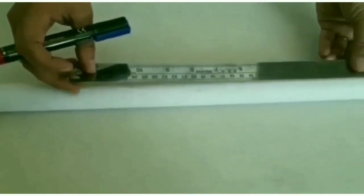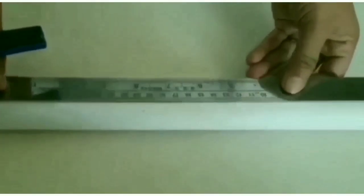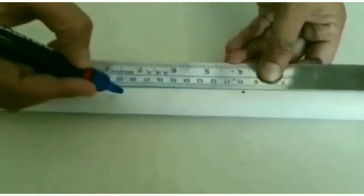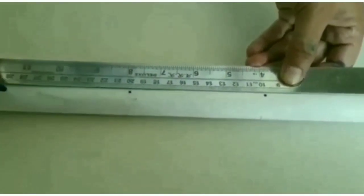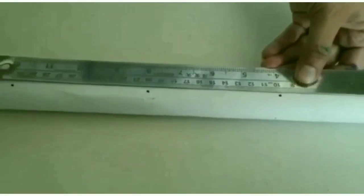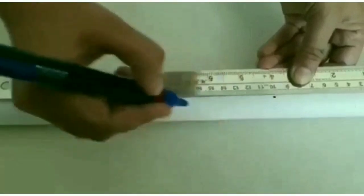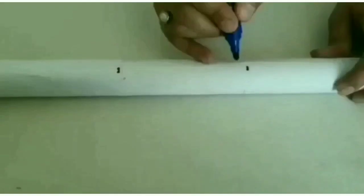Students, you have to mark ten dots on a straight line, each at the gap of ten centimeters. Then after marking dots, we will write numbers starting from ten up to hundred below these ten marks.